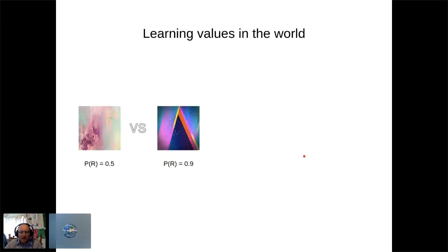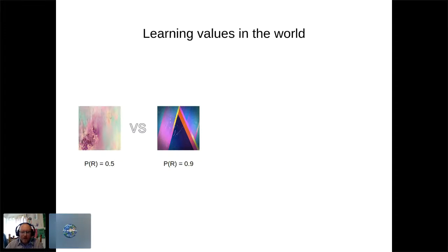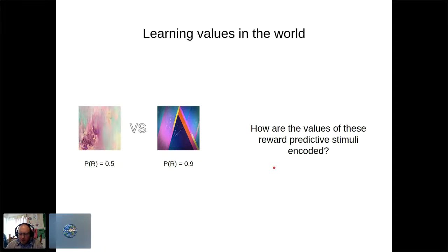In the Wallace Lab we essentially study the prefrontal mechanisms underlying cognition. A typical problem has an animal evaluating two options — we have this ability to develop abstract stimulus-outcome associations. If presented with a picture and given a juice reward, these become linked. Animals can learn these associations — say 50% or 90% probability of reward — and then decide between options. One key question is how these reward-predictive stimuli are encoded in the frontal cortex.